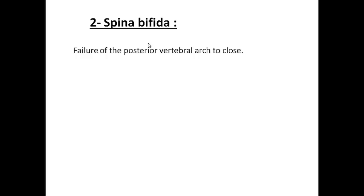The second anomaly we're going to talk about is spina bifida. Spina bifida is a condition where there is a failure of the neural tube to close at the caudal aspect — in other words, it is the failure of the posterior vertebral arch to close.